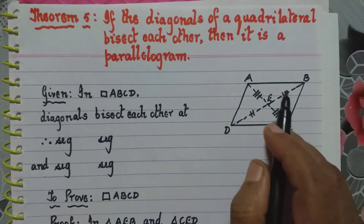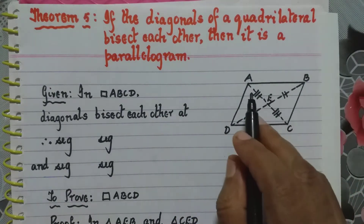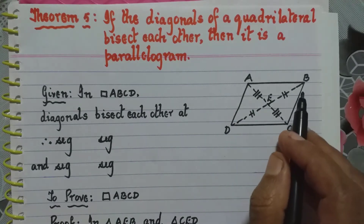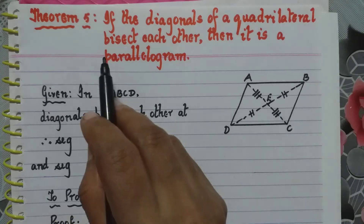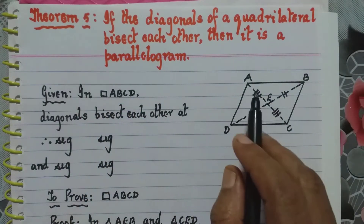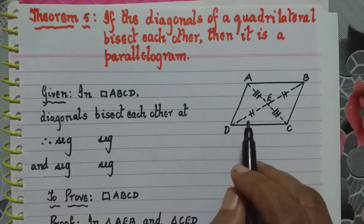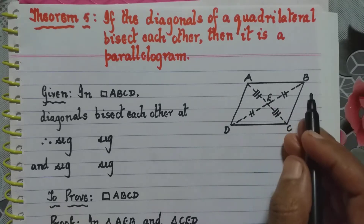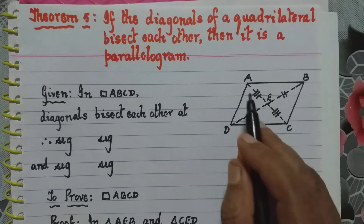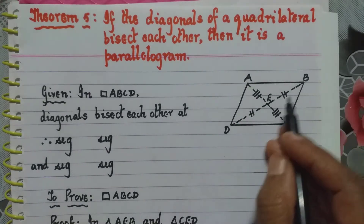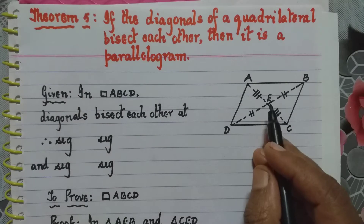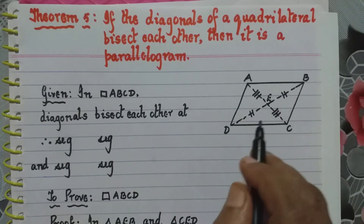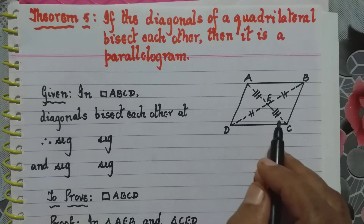A quadrilateral ABCD is given to us. They have given that the diagonals bisect each other. The meaning of bisect each other is they cut each other into two equal parts. We have the diagonals — diagonal AC and diagonal BD — and they meet each other at point E. These two diagonals bisect each other.